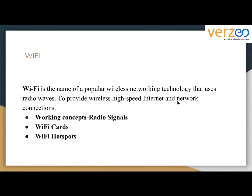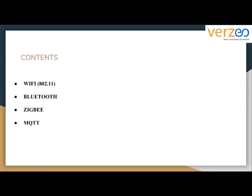Wi-Fi is the name of a popular wireless network technology that uses radio waves. A radio wave is basically an electromagnetic wave of frequency between 10 to the power of 4 and 10 to the power of 11 to 12 hertz. Wi-Fi uses these electromagnetic or radio waves for long-distance communication, to provide wireless high-speed internet and network connections. A common misconception is that the term Wi-Fi is short for 'wireless fidelity,' but it is not — Wi-Fi is simply a trademark phrase that means IEEE 802.11, which is the standard defining Wi-Fi connectivity.